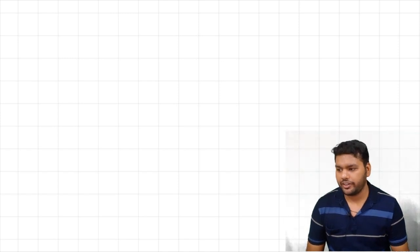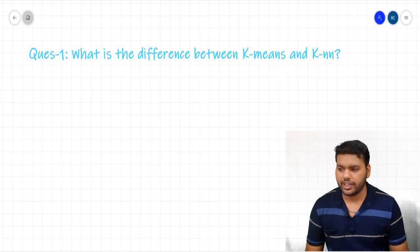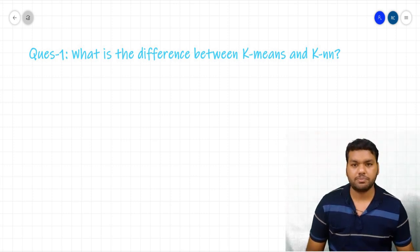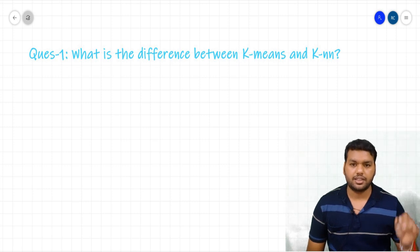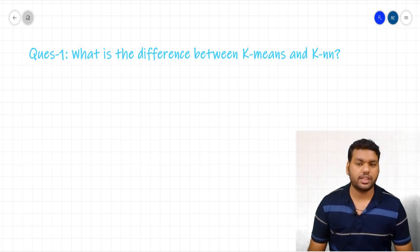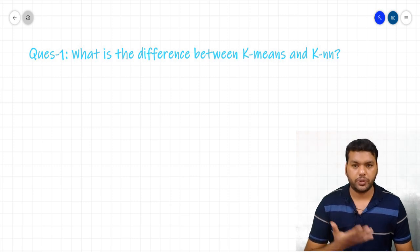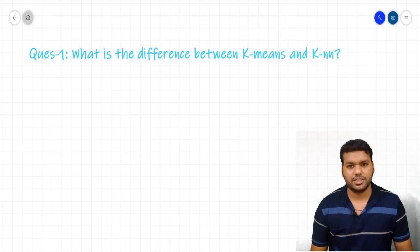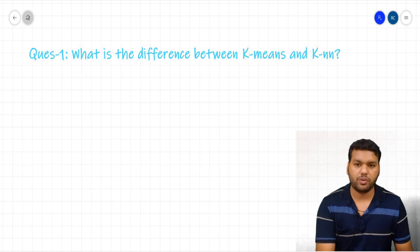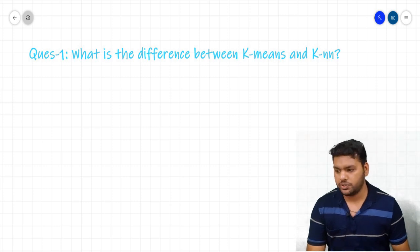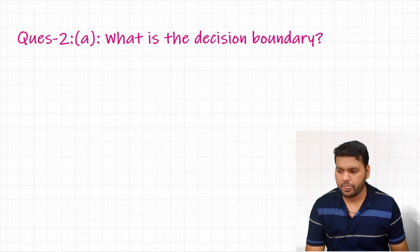The first question in the interview that people generally ask is: what is the difference between the K-means and KNN algorithm? K-means is an unsupervised machine learning algorithm which is used to partition the data points into K number of clusters, whereas KNN is a supervised machine learning algorithm which is used to classify new data points according to the neighborhood of that point. This is one of the most basic questions the interviewer asks to check your knowledge of the difference between supervised and unsupervised machine learning algorithms.